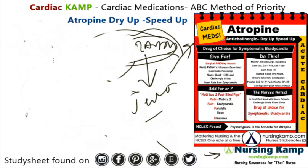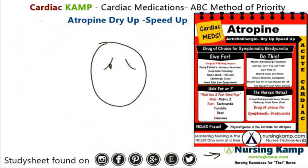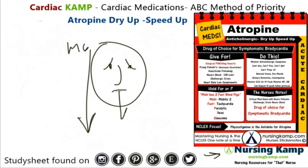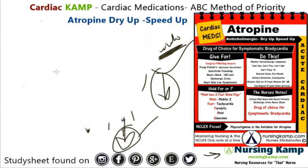Another reason atropine is given is during a cholinergic crisis. Remember, atropine is an anticholinergic. Patients who need cholinergics include those with myasthenia gravis — which causes droopy eyelids. In myasthenia gravis, the problem progresses downward to the vagus nerve and the heart rate starts to go down. A cholinergic crisis means too much cholinergic medication, so atropine — as an anticholinergic — is the treatment.